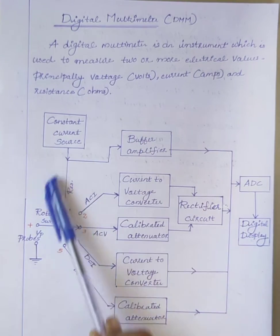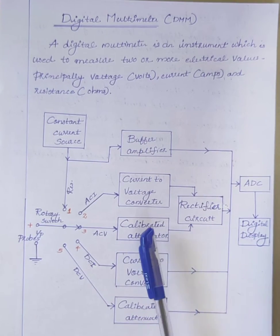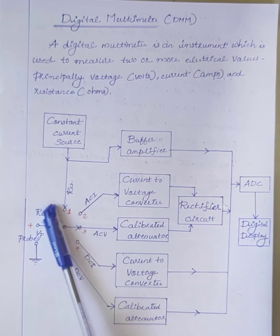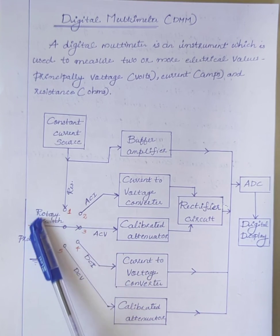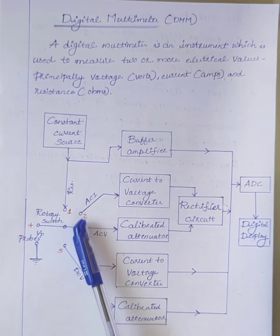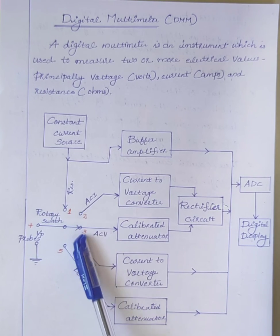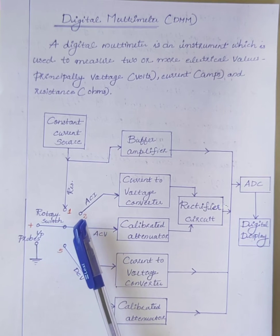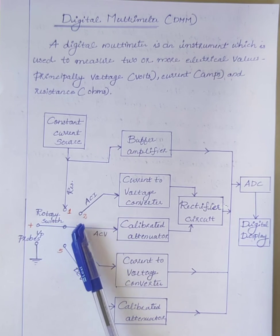The block diagram of the digital multimeter is shown here. This one is the rotary switch. By properly connecting the leads, we can measure voltage, current, and resistance.